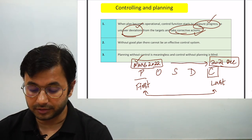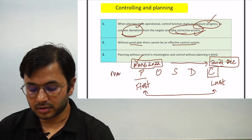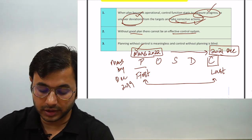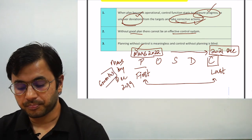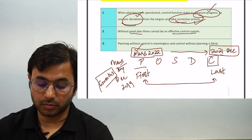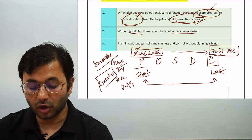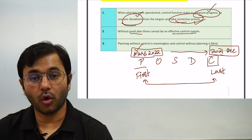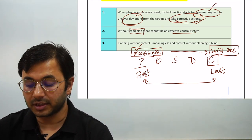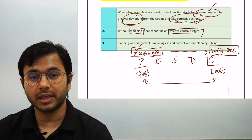Without a good plan, there cannot be an effective control system. For example, if the plan says reach Mars by December 2019, but we are in June 2019 — only six months remain to create technology to reach Mars when it takes more than eight months just to get there. The plan is unrealistic, it's a bad plan which cannot be achieved at all, whatever the organization might do. Without a good plan, there cannot be an effective control system, because the plan is not going to materialize at all in the future and therefore there will never be an effective control system.